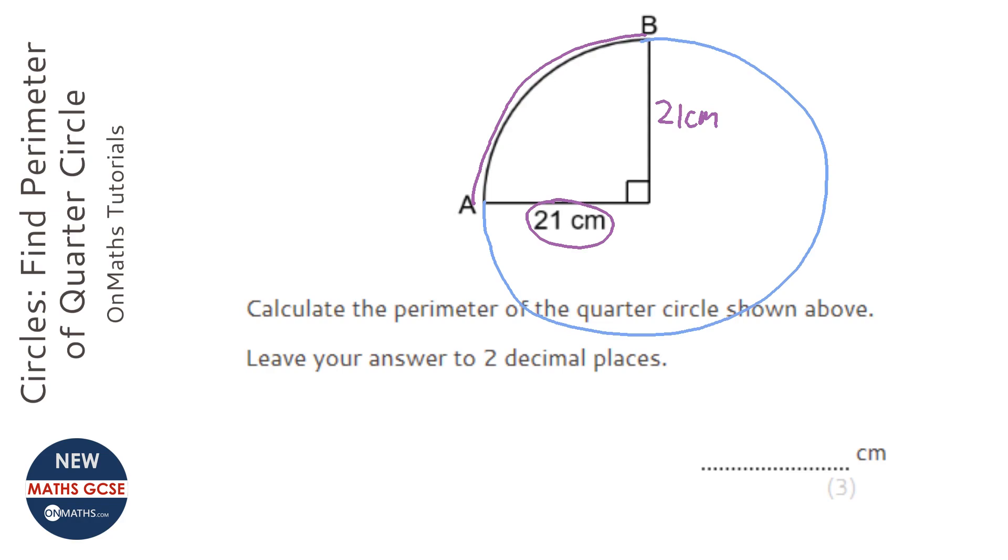Now, the total distance around the circle is called a circumference, and the formula for the circumference is pi times diameter. Now, we're not given the diameter, we're given a radius, because if you look, this 21 cm only goes halfway across the circle.